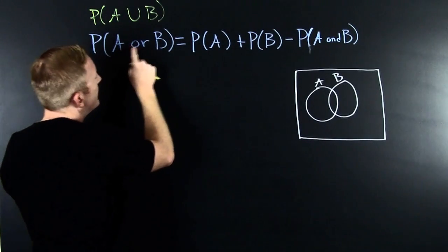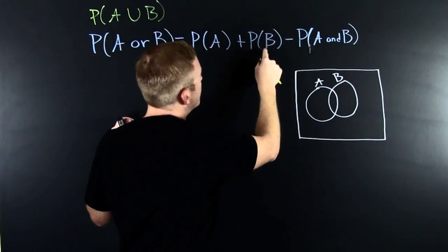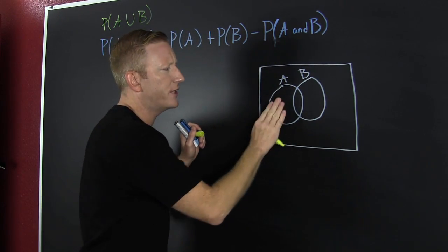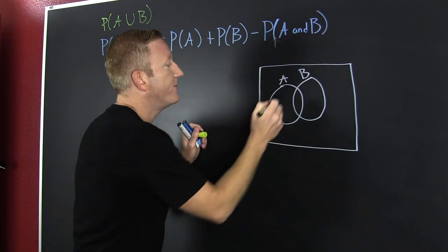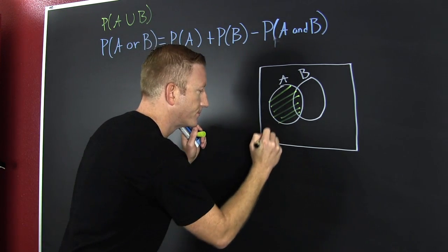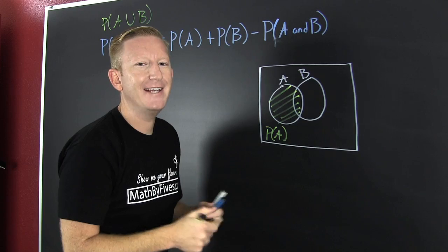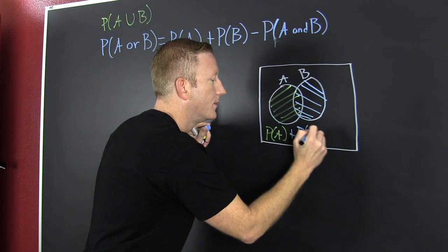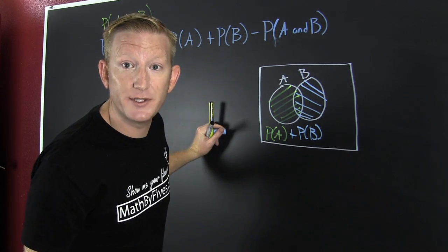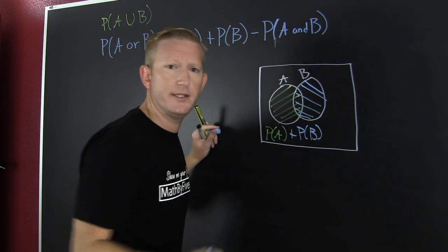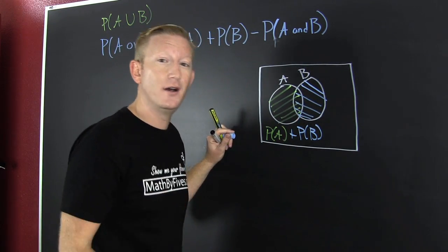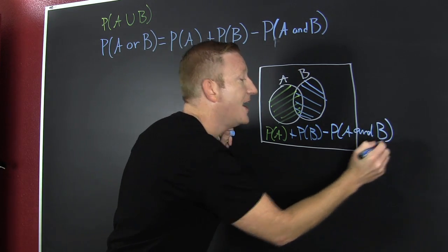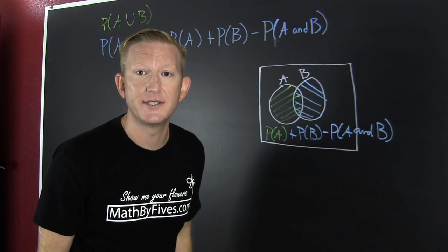Let's see where this comes from. The probability of A or B is the probability of A plus the probability of B minus the probability of A and B. If we look at a Venn diagram — this being A — if we're looking for the probability of all of this, we first look at the probability of A, then add the probability of B. But the intersection has been double counted — once for A and once for B — so we subtract out one of those countings. That's minus the probability of A and B. That's how the formula comes about. It's not so magic.